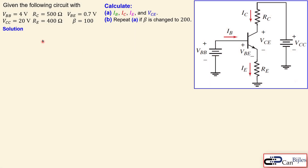Let's look at our example. This is the circuit with the following data: we have VBB and VCC, two DC voltage sources of four and twenty volts. We have two resistors RC and RE — the collector and the emitter resistance. Instead of a base resistance, we have an emitter resistance. The transistor has VBE of 0.7 volts and beta of 100.